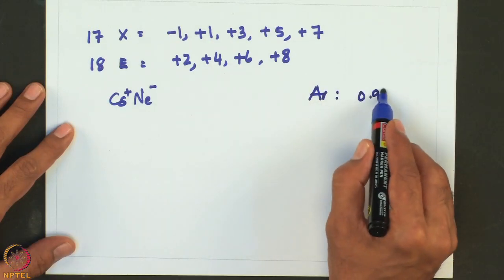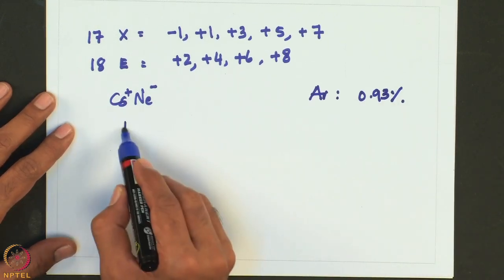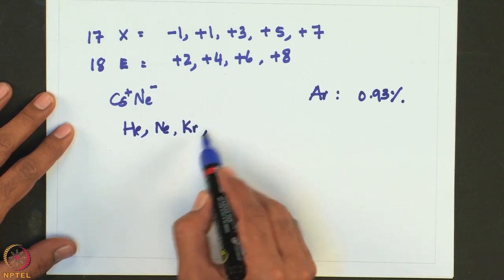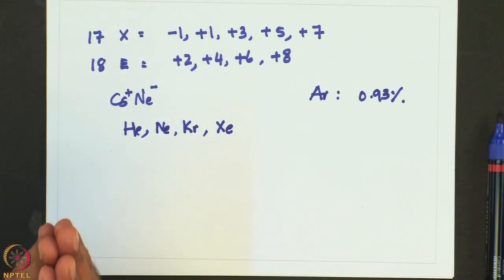All of the elements exist as highly unreactive monoatomic gases with very low boiling points. Argon is the most abundant, comprising 0.93% of the atmosphere, while helium, neon, krypton and xenon are trace constituents of air. All isotopes of radon are radioactive and are formed naturally from the decay of heavy radioisotopes such as those of radium and uranium.